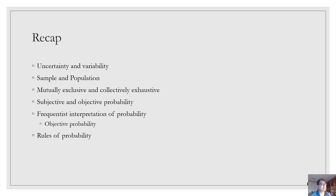We also talked about sample and population. The population refers to the larger set of values that a random variable can take, and the sample is a subset of that population that we have either observed or monitored. So we use samples to make inferences or predictions about the population. The population contains the unknowns, and the sample is what's known or what's drawn from that population.